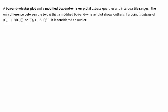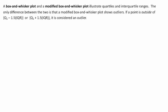A box and whisker plot and a modified box and whisker plot illustrate quartiles and the interquartile range. These are diagrams that represent the quartile description of spread. If a data point is outside Q1 minus 1.5 times the IQR, or Q3 plus 1.5 times the IQR, this is how we classify a data point as an outlier.